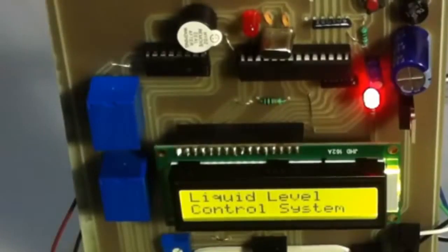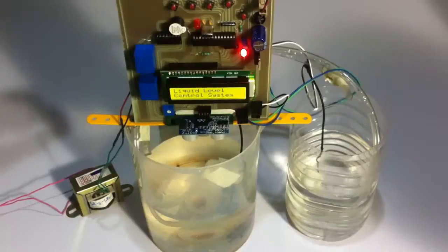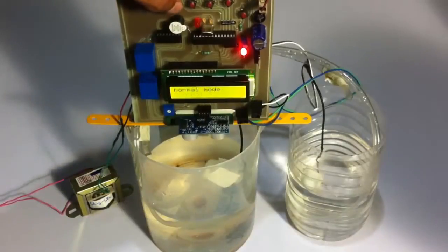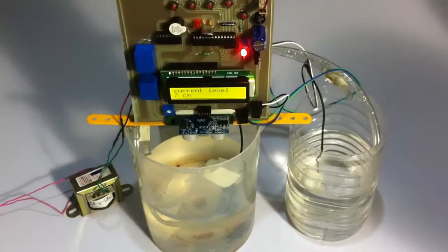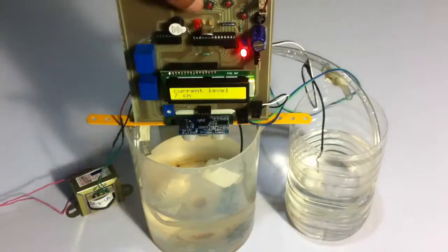On resetting the system, let's now check the current value first. In normal mode it's showing 7 centimeters current value. Now let's increment it to 10 centimeters.